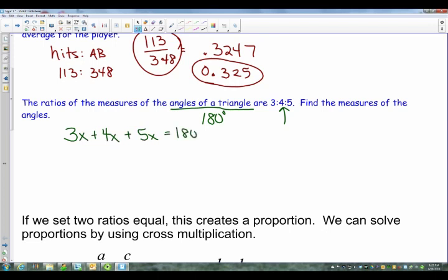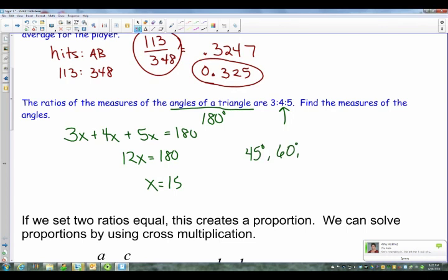And then you solve from here. Okay, so 3 plus 4 plus 5 gives you 12x equals 180, divide by 12, and you get x equals 15. Now make sure you understand what they're asking for. They're not asking for x, they're asking for the angles. So you take that and you substitute it back in. So you've got 15 times 3, which is 45 degrees. 15 times 4, which is 60 degrees. And 15 times 5, which is 75 degrees. So your angles of your triangle are 45, 60, and 75 degrees. So those are a couple different ways you can use these ratios.